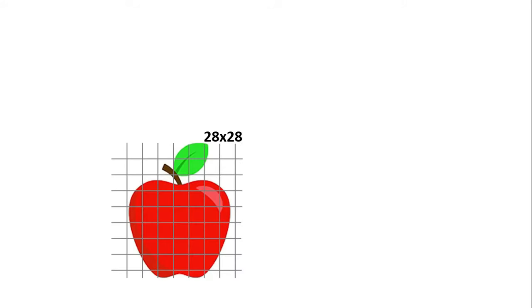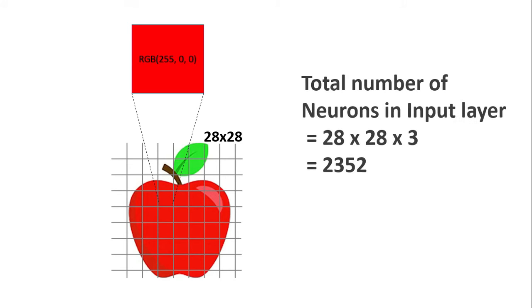Let's say our image of an apple is of the size 28 pixels by 28 pixels and the color schema that we are using is RGB. Thus, each pixel will store three values of red, blue, and green each. Thus, the total number of features will be 28 into 28 into 3, which will be 2352. And thus, the total number of neurons in the input layer will be 2352, each neuron holding the color value of every pixel.